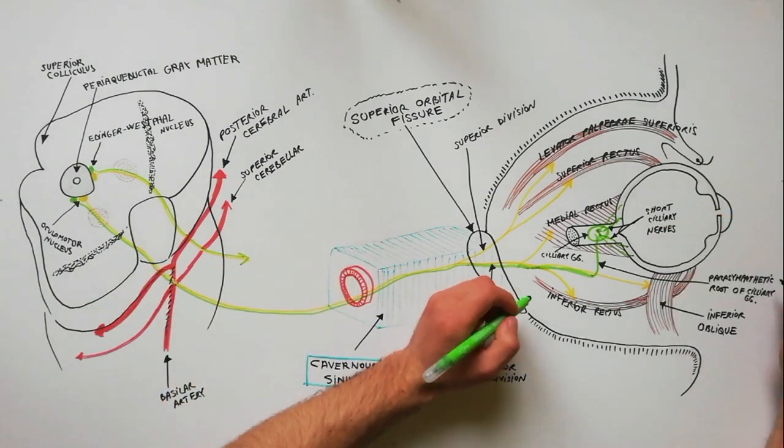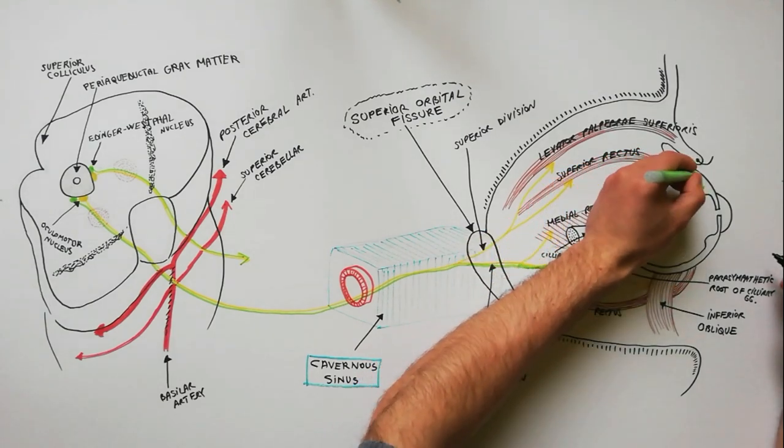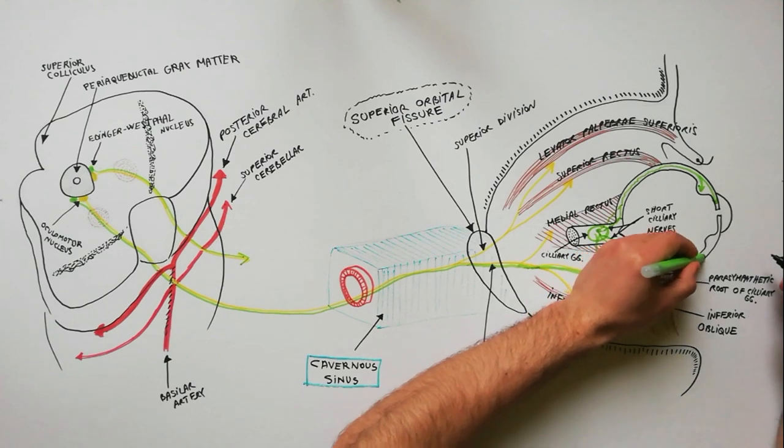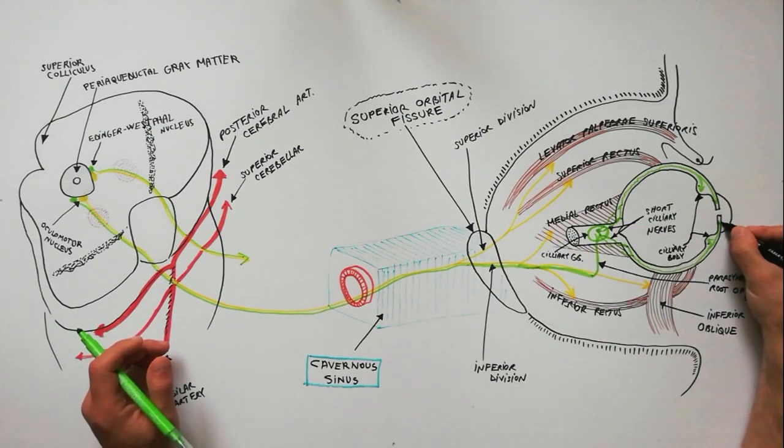The postganglionic parasympathetic fibers pass forward in delicate grooves on the inner surface of the sclera and are distributed to the ciliary muscle and the sphincter pupillae.